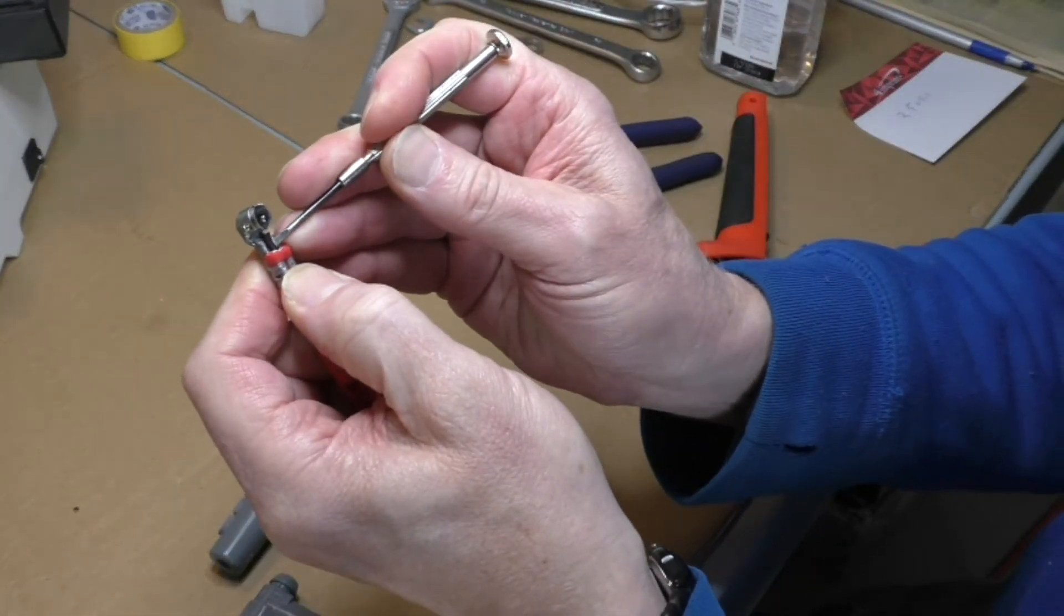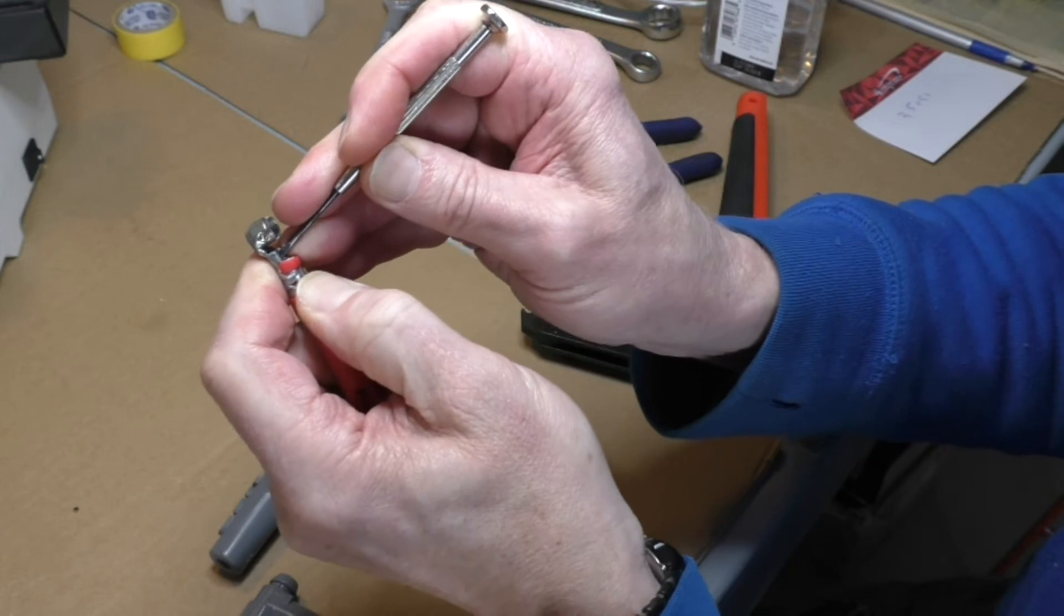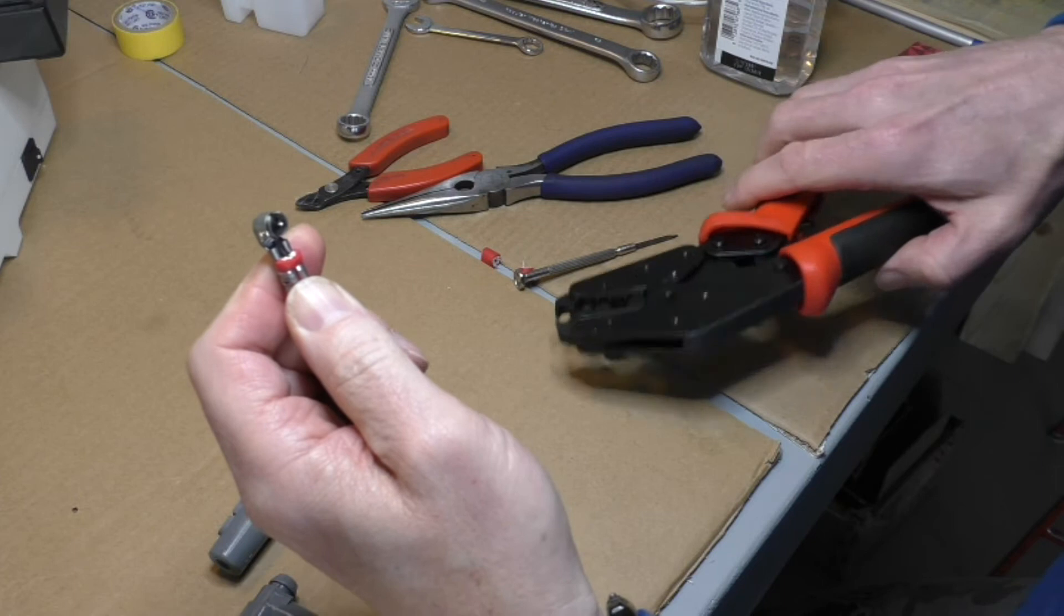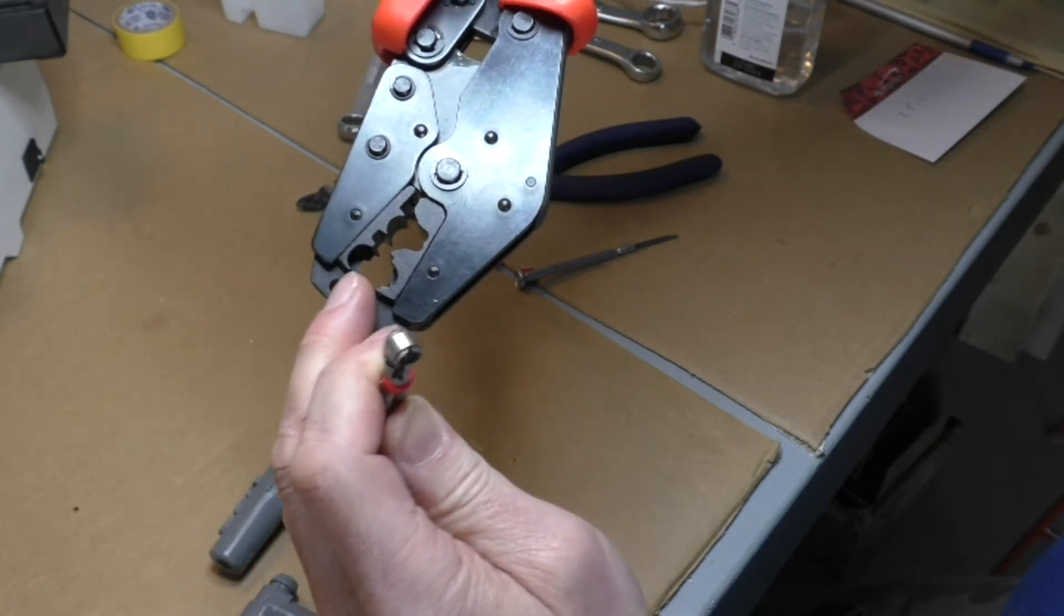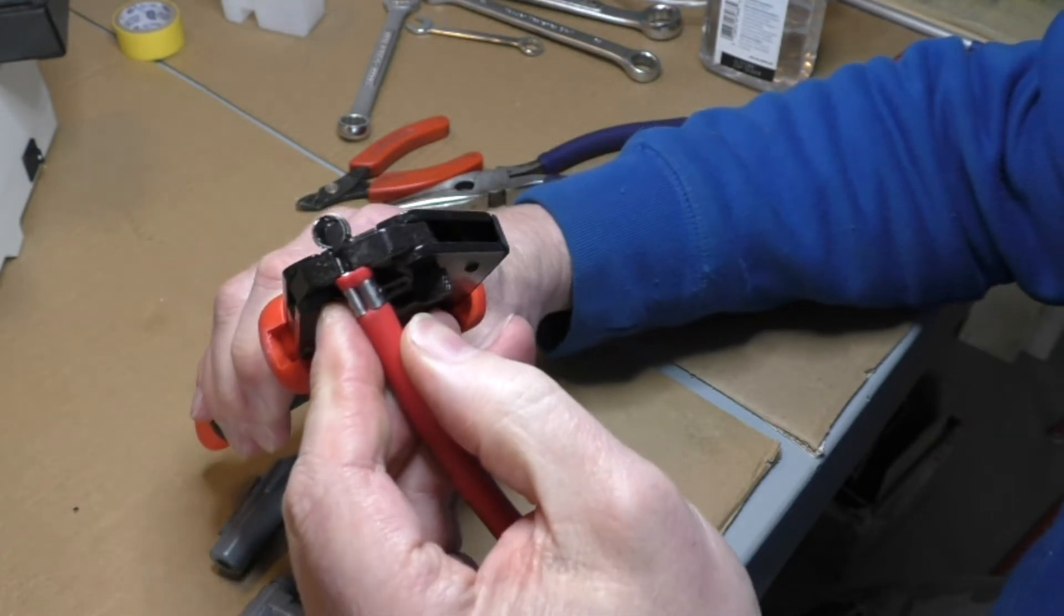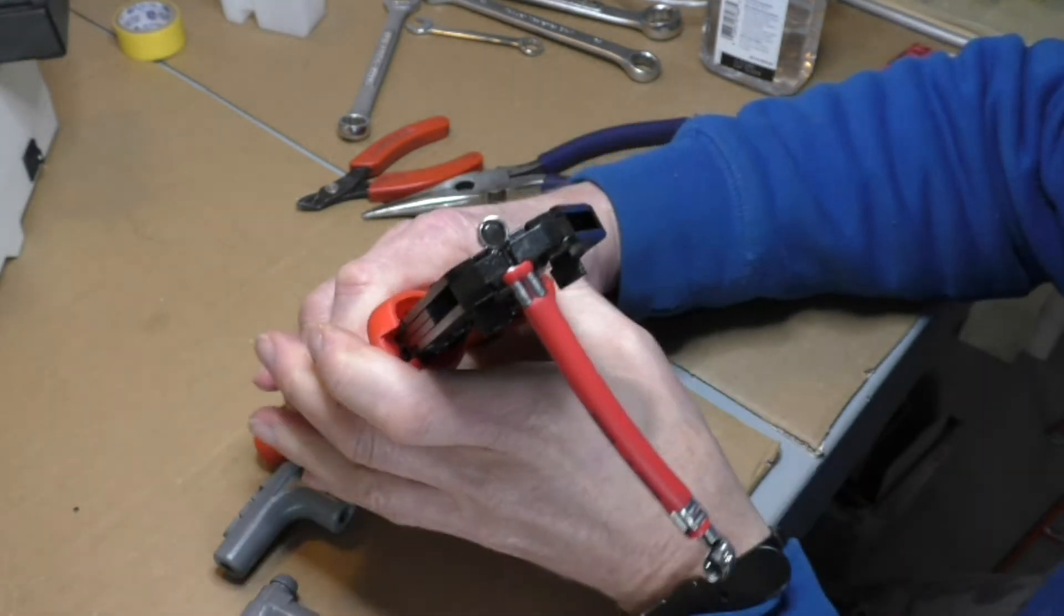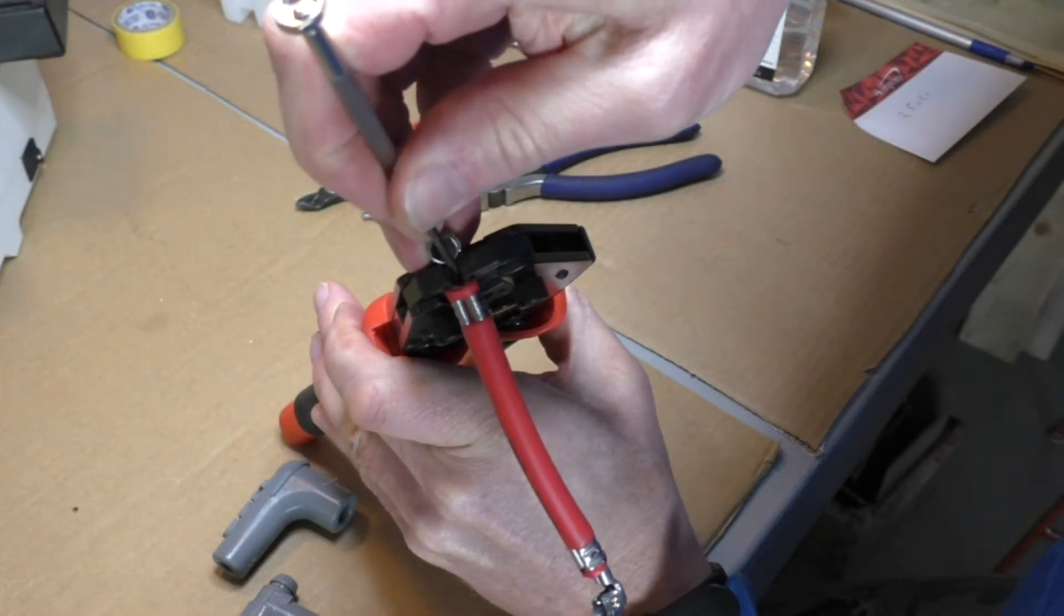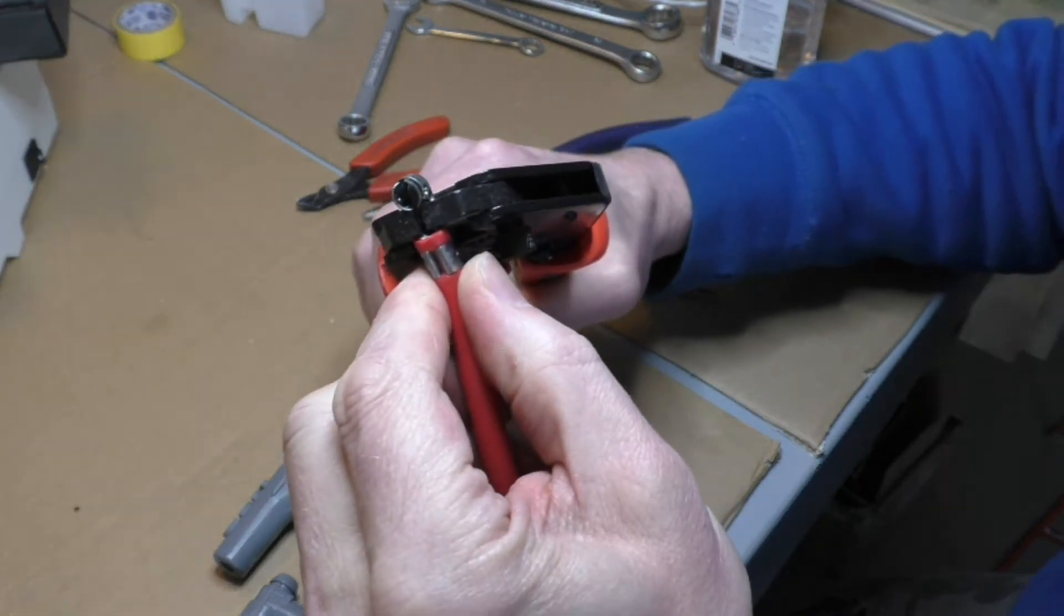We've got to push the conductor down in. It tends to want to crawl up inside there a bit. We're going to use the end jaws here to crimp this part. You might need to push this down a little more with the screwdriver here as you crimp a little bit. And just give that a squeeze.